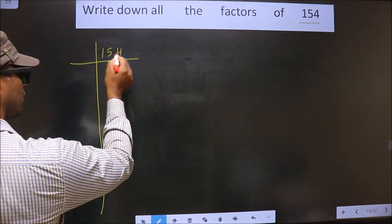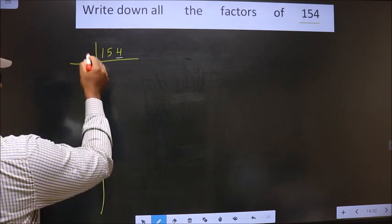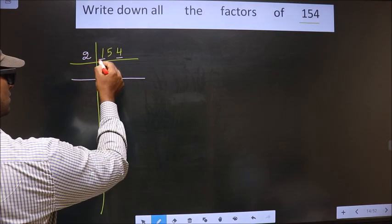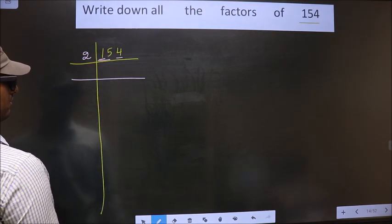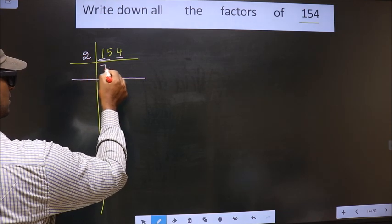Now, for this number, the last digit is 4 which is even. So we take 2 here. Now, the first number is 1, 1 smaller than 2. So we take 2 numbers, that is 15. A number close to 15 in 2 table is 2 sevens 14.